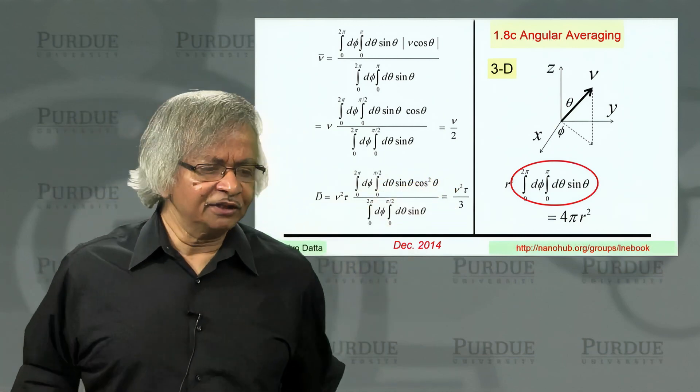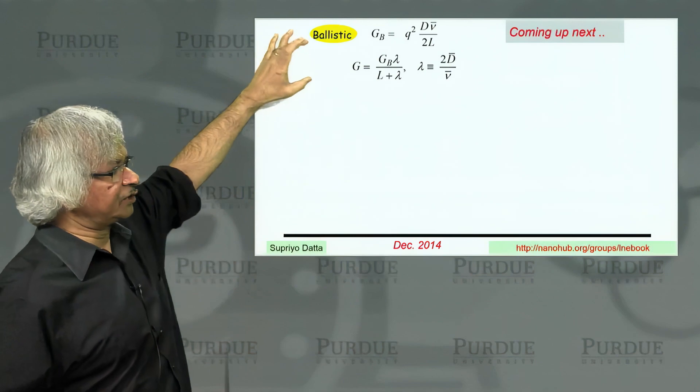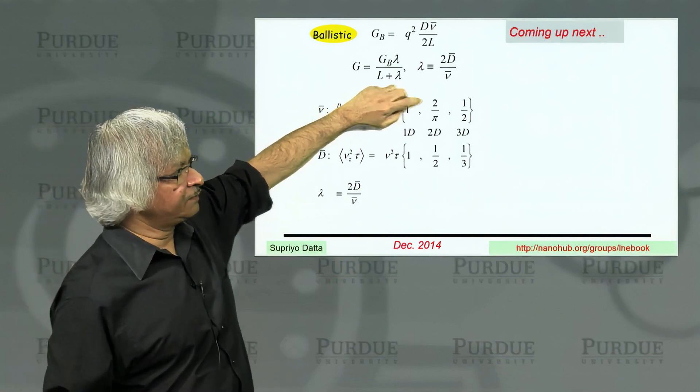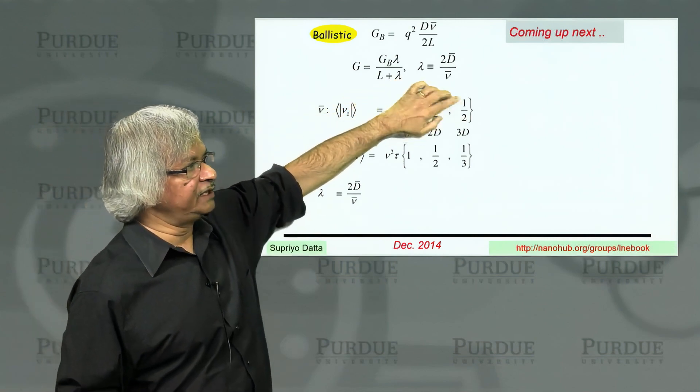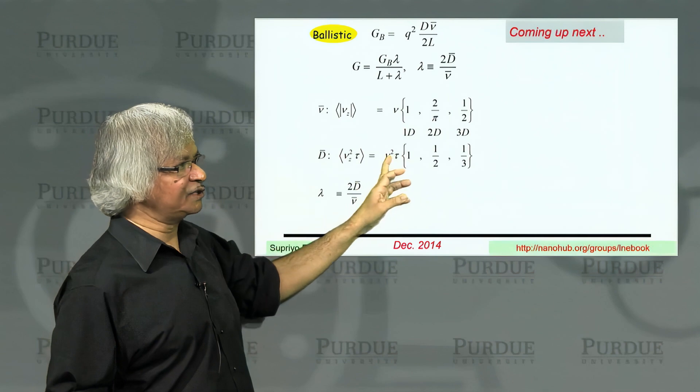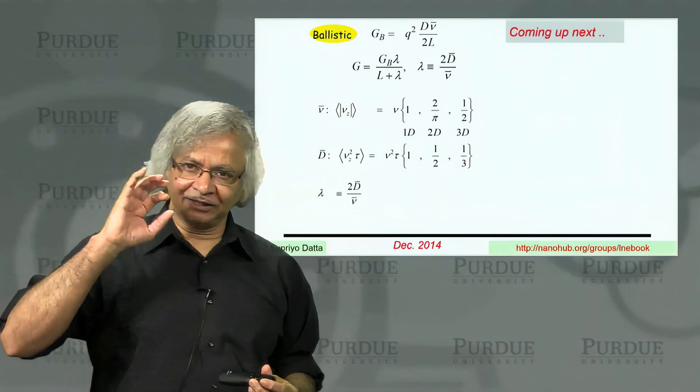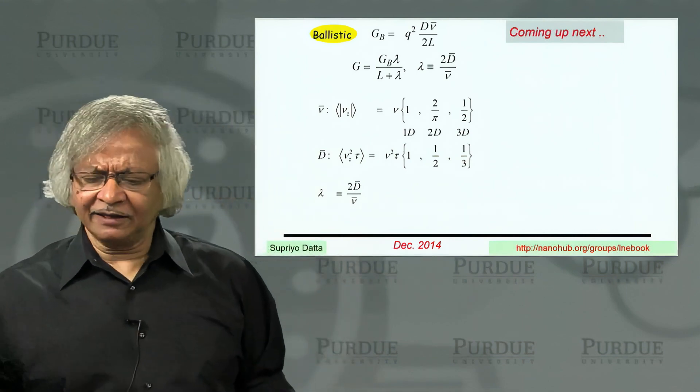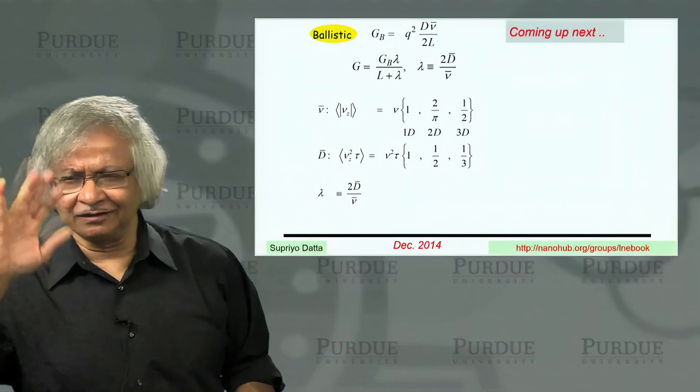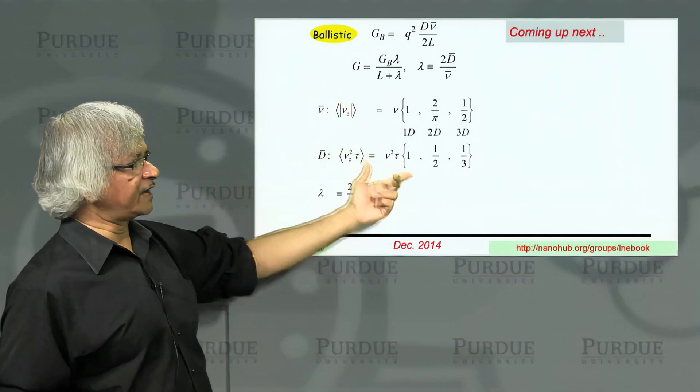So we have kind of gone through this thing then for 1D, 2D, and 3D. So if you collect all those results together, you see, what you would have is average value of velocity. In 1D it's just v. 2D is 2 over pi. 3D there's a factor of half. For diffusion coefficient actually the result is quite simple. It's v square tau, 1D is 1, 2D is half, 3D is 1 third. So it's like 1 divided by the number of dimensions. So in fact, there's actually a simple argument that can be used to get that result without doing all these integrals. But I won't go into that. I wanted to do everything in a straightforward parallel way. So you get these averages directly.